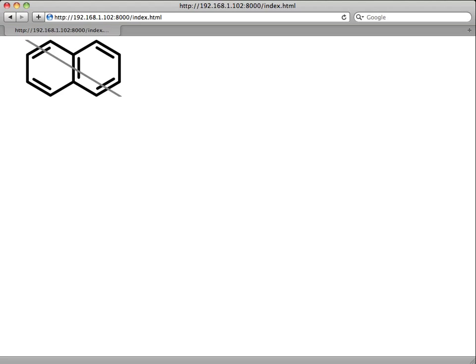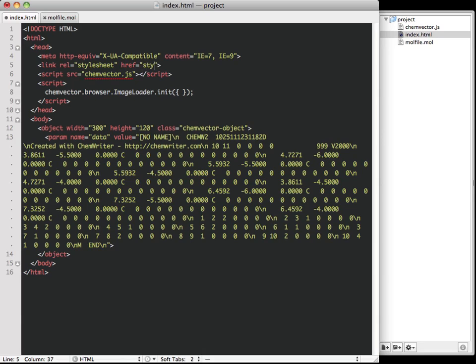Now, let's say I wanted to customize the appearance of the structure by using a black background with light-colored bond lines. I first create a CSS file to change the background to black.